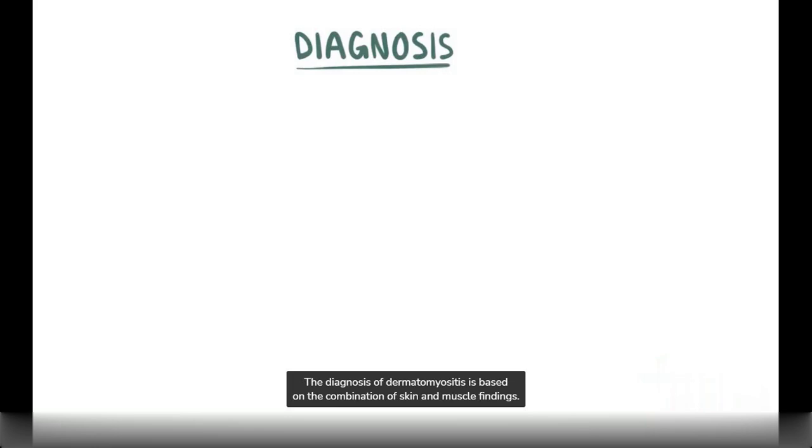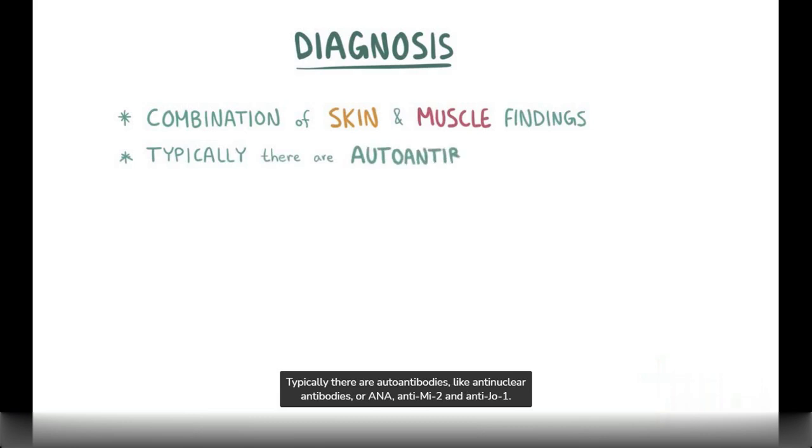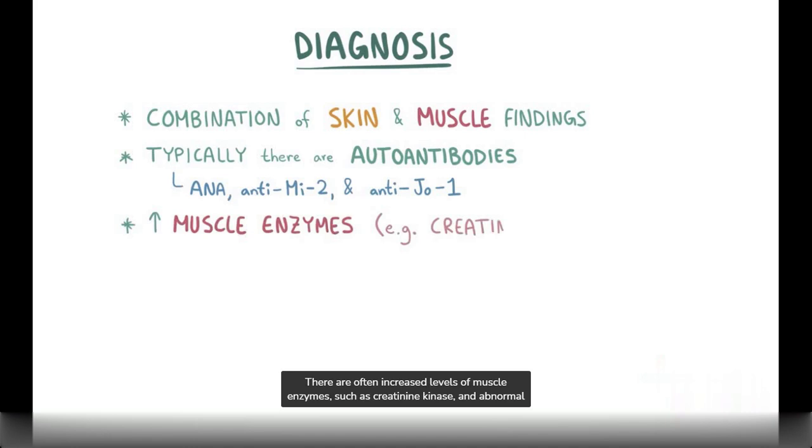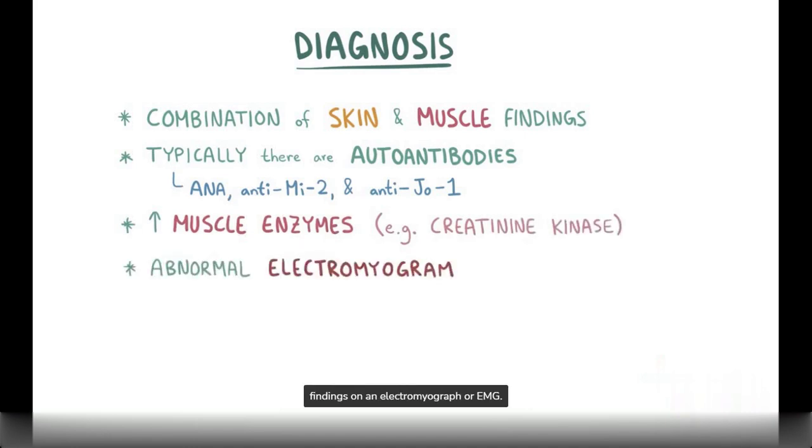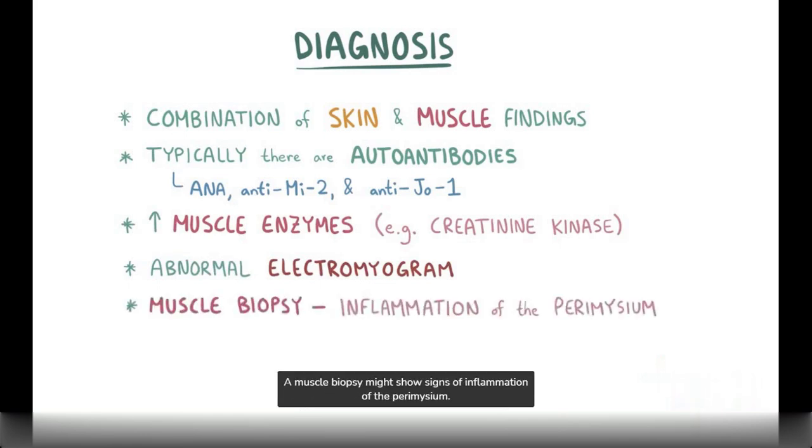The diagnosis of dermatomyositis is based on the combination of skin and muscle findings. Typically there are autoantibodies, like antinuclear antibodies or ANAs, anti-MI2, and anti-JO1. There are often increased levels of muscle enzymes, like creatinine kinase, and abnormal findings on an electromyogram, or EMG. A muscle biopsy might show signs of inflammation of the perimysium.